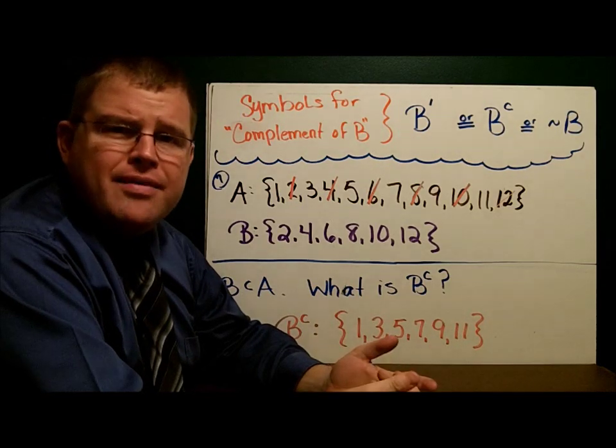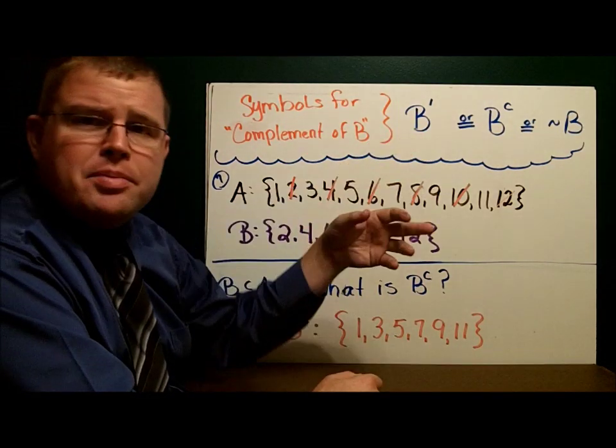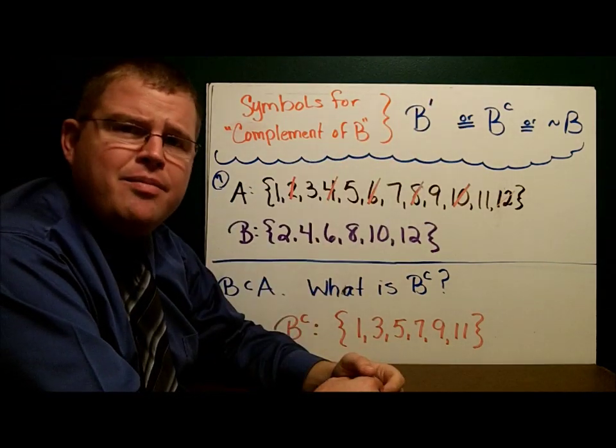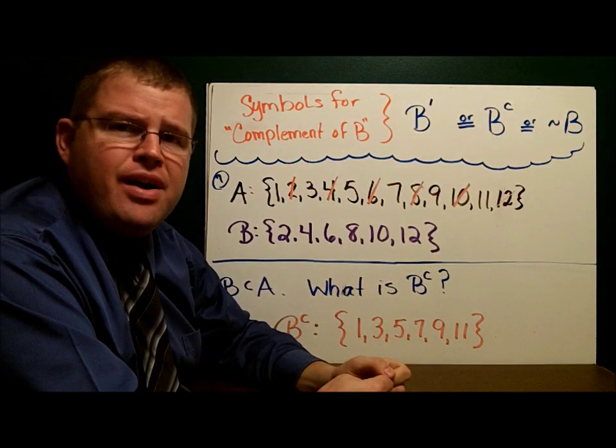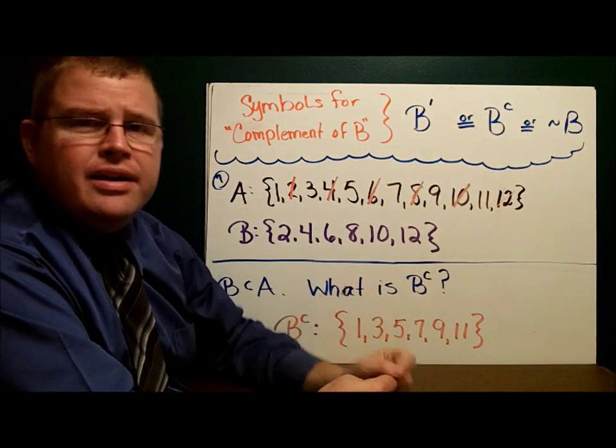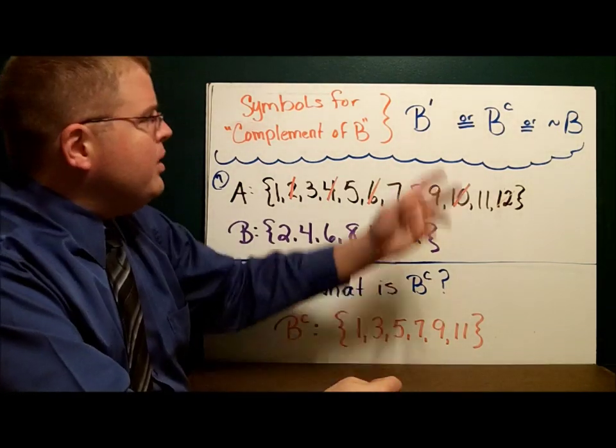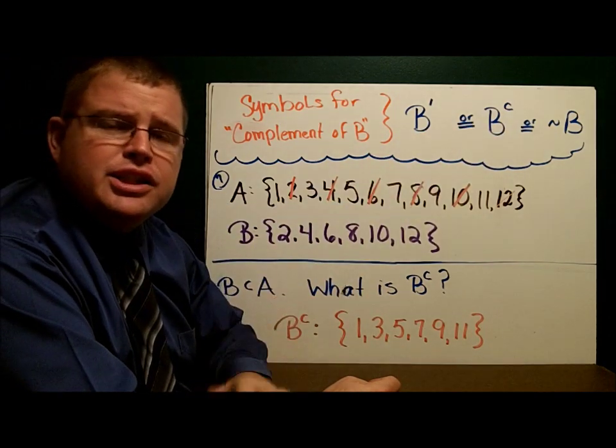The symbols we use, we have three choices for complement. Sometimes we'll say if we want the complement of set B, we'll say B with like an apostrophe up top there. Or we'll say B with a little C up at the top there. Or we'll put a squiggle B. The squiggle is read not. So B complement, three different notations you could use.